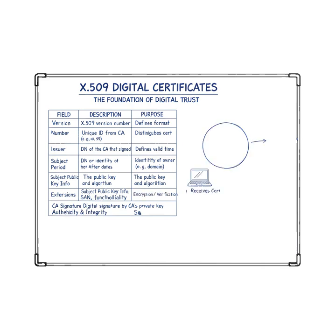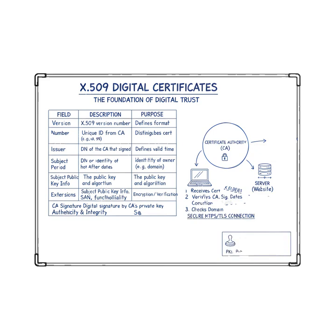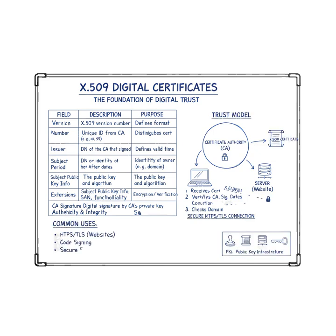Essentially, an X.509 certificate acts as a digital passport. It contains crucial details, including the identity of the subject, the certificate owner, the validity period, the public key itself, and the identity of the trusted issuer or certificate authority, CA.